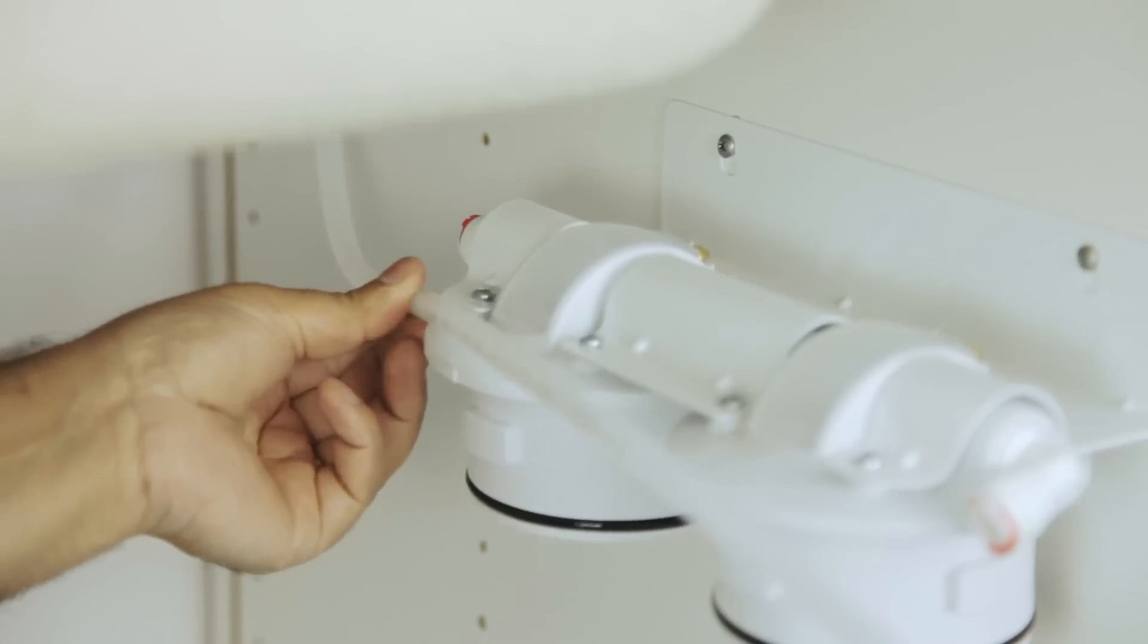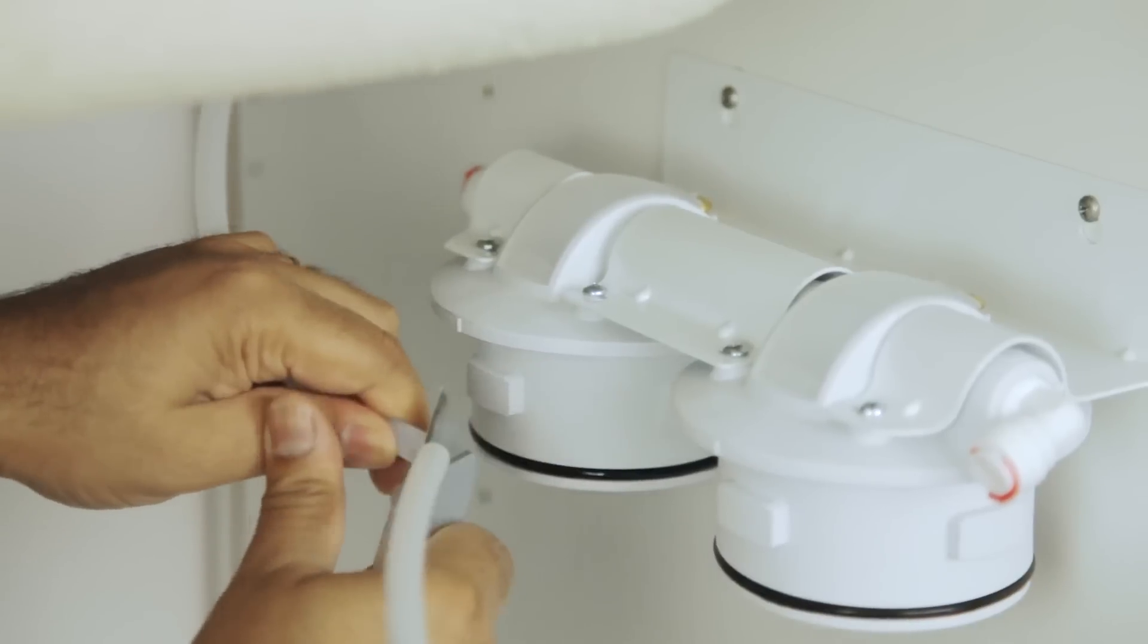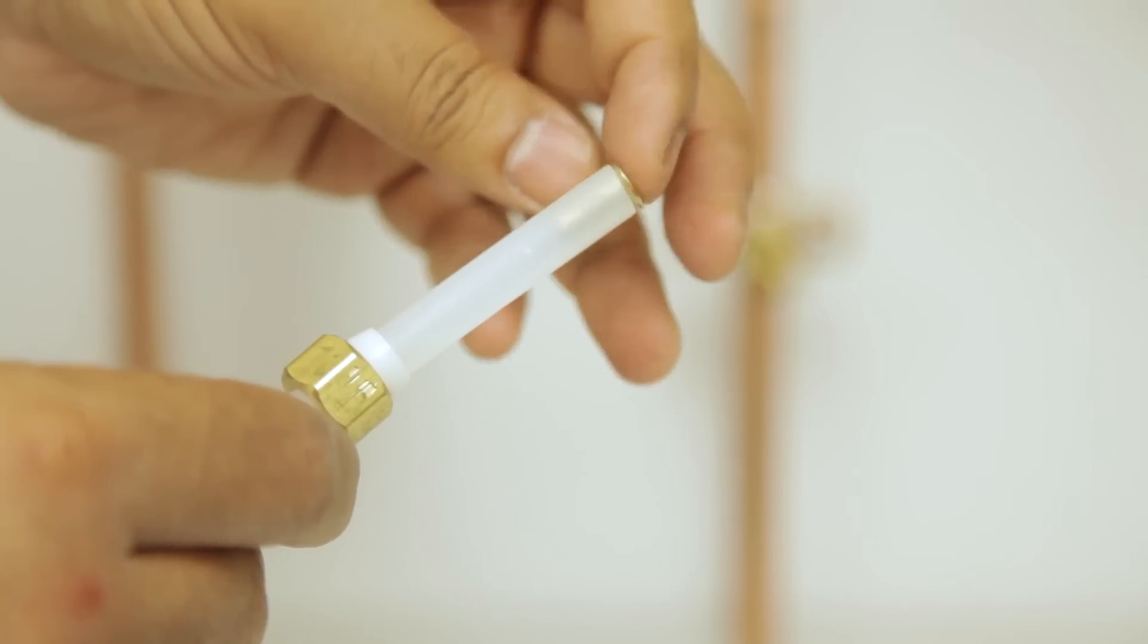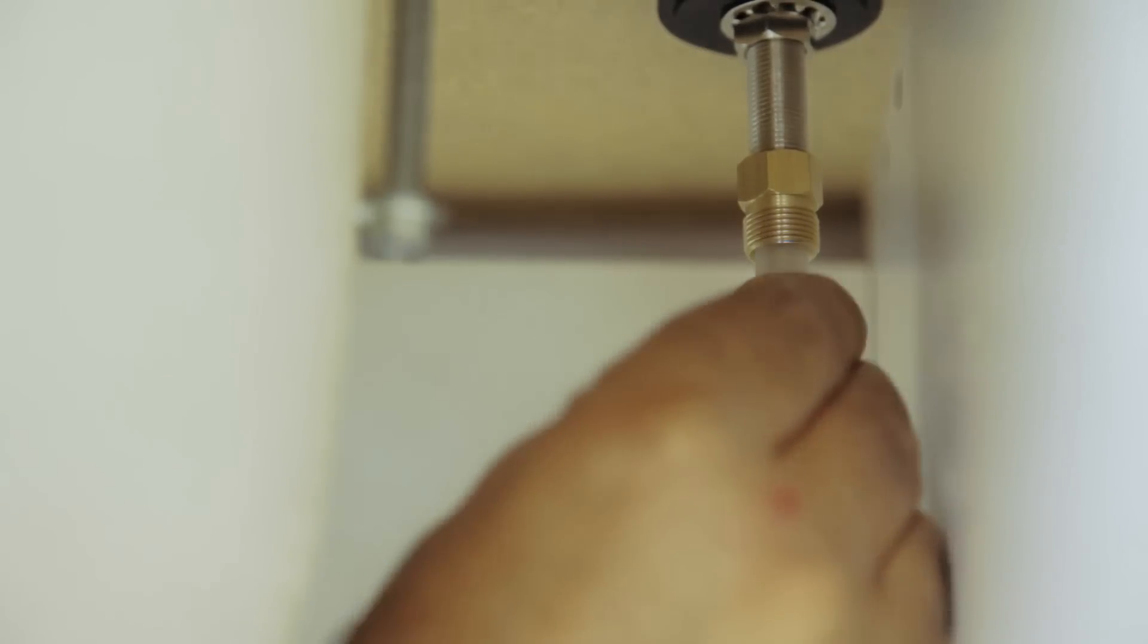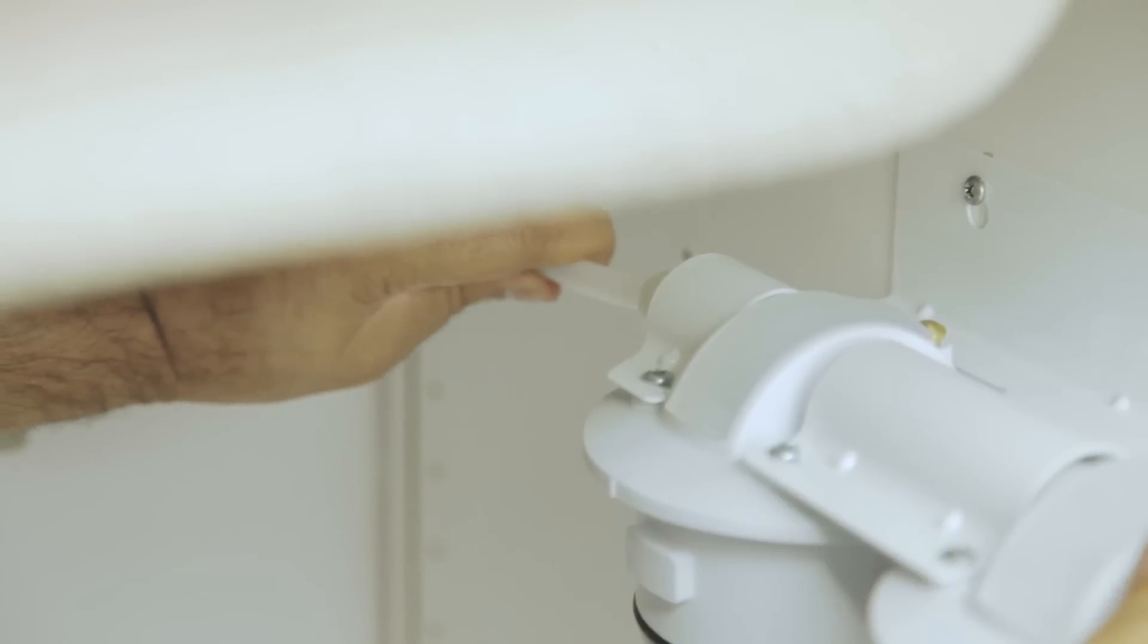Measure and cut the tubing to connect faucet to the outlet fitting. Using included compression fittings, attach one end of the tube to the faucet. Remove the red locking clip on the outlet fitting and push the other end of the tube into the outlet fitting. Replace locking clip.